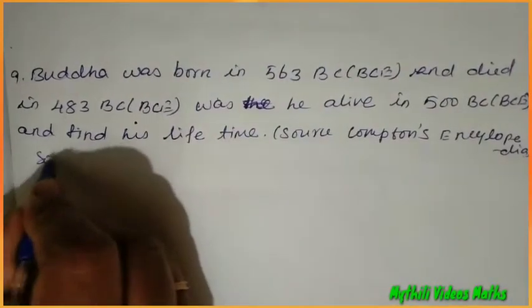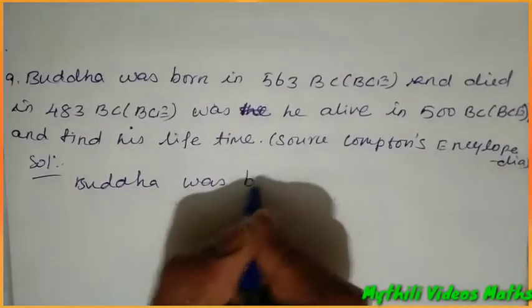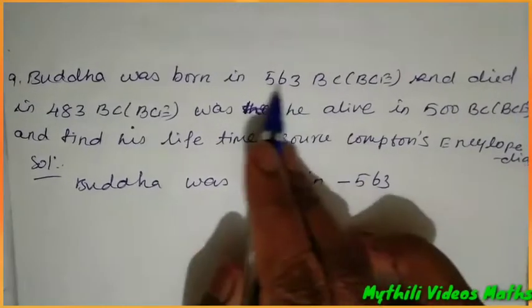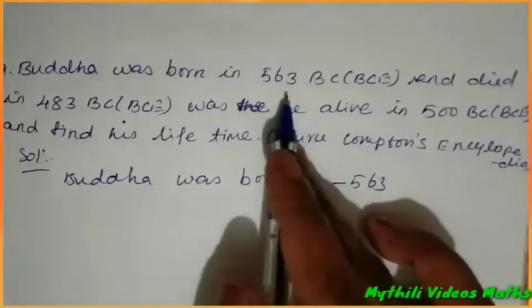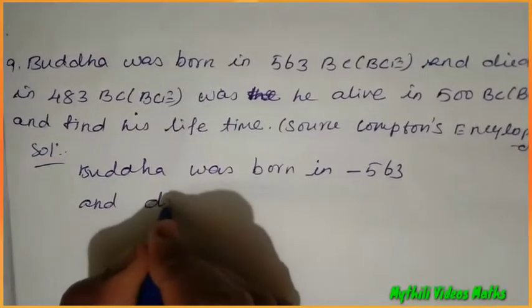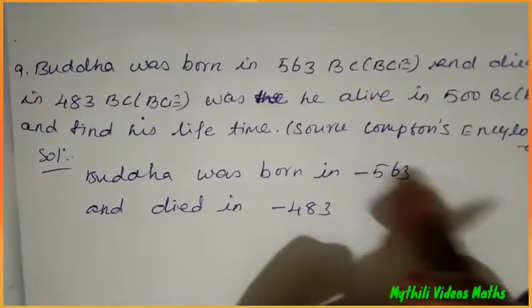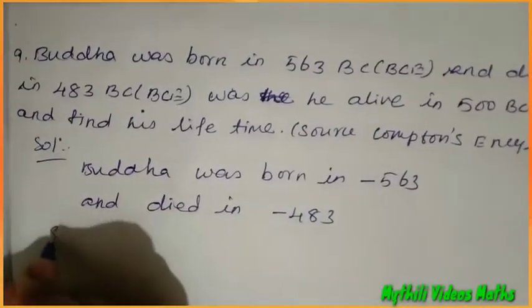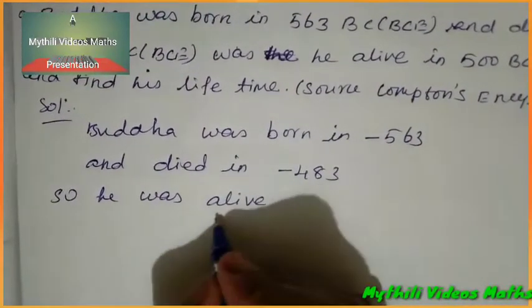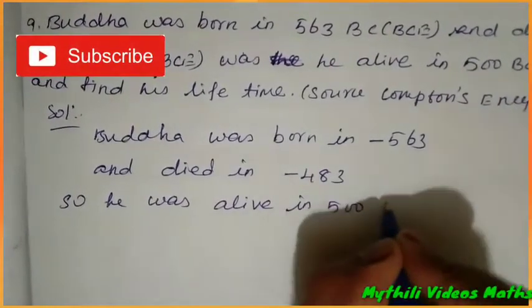First, we write: Buddha was born in minus 563. So the birth is minus 563, and he died in minus 483. Both are in the past, so we take minus. He was alive in 500 BC, which falls in between.